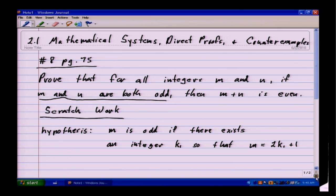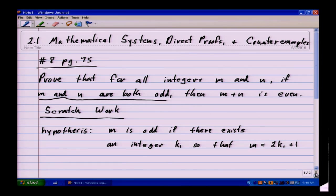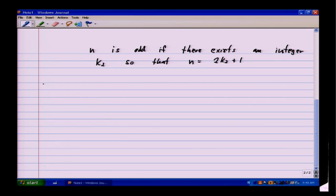Okay, so that's what we know from the hypothesis. What we want to do is take this information that we're given and reach the conclusion. The conclusion in the statement is that m plus n is even. What am I looking to conclude?